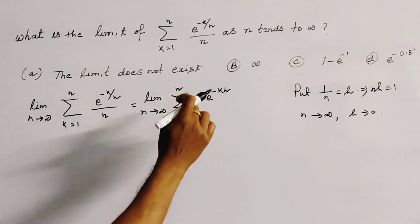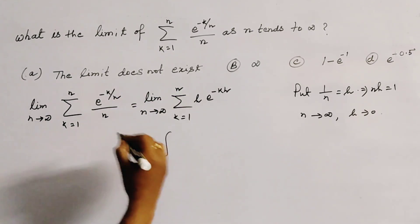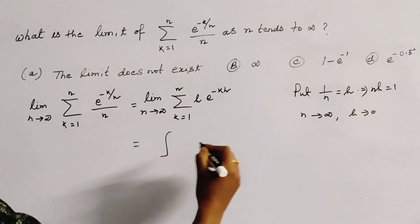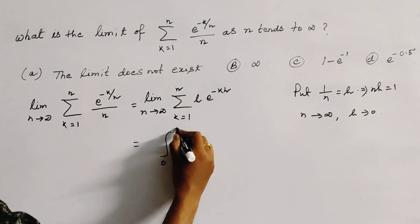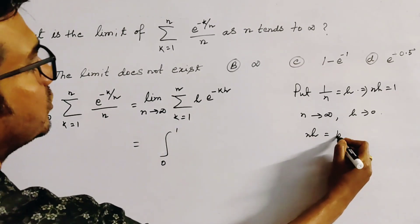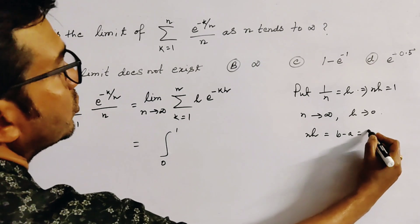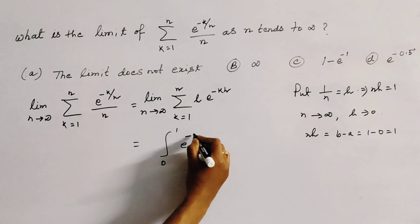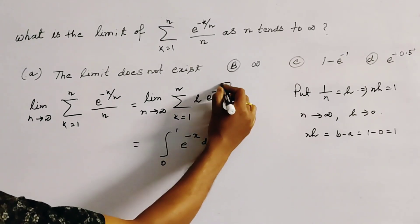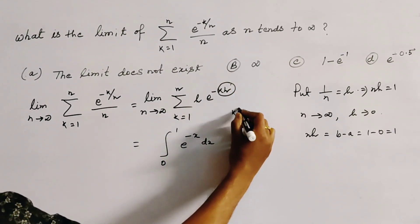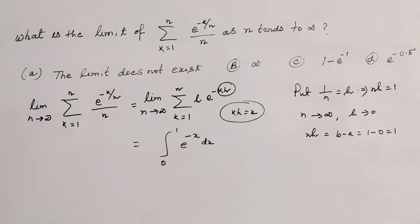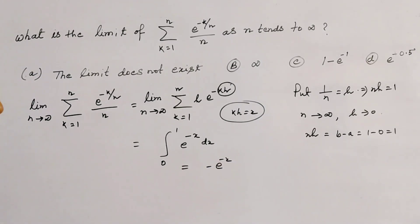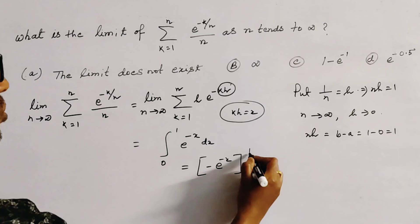I am going to use the definition of definite integration. The limits of the definite integration are 0 to 1, because n times h equals b minus a, which equals 1 minus 0, equals 1. So this becomes the integral from 0 to 1 of e to the power minus x dx, where we replace k times h with x.